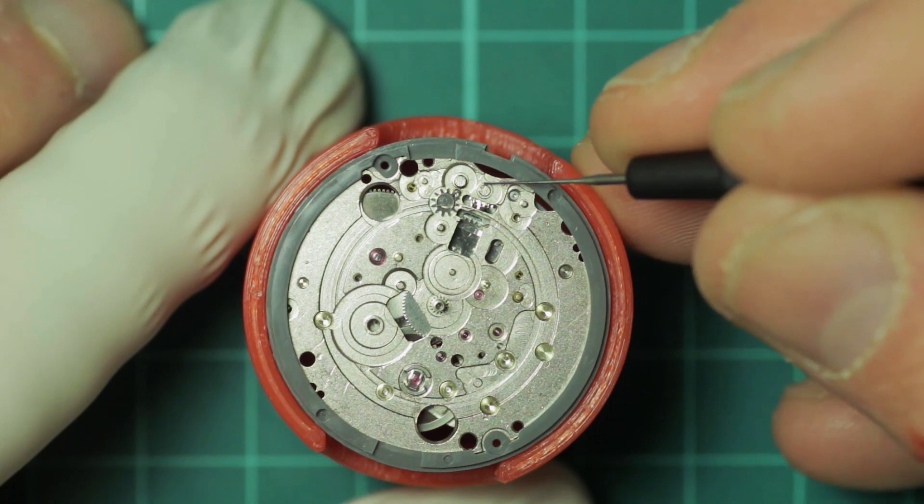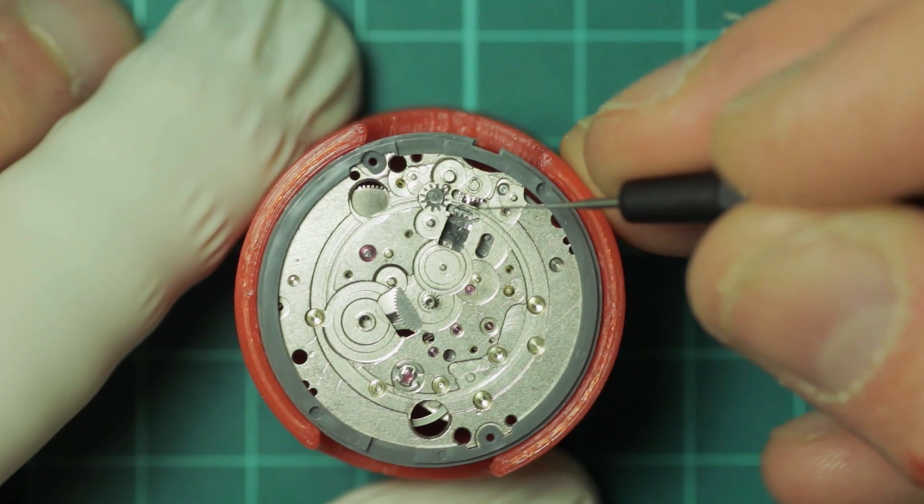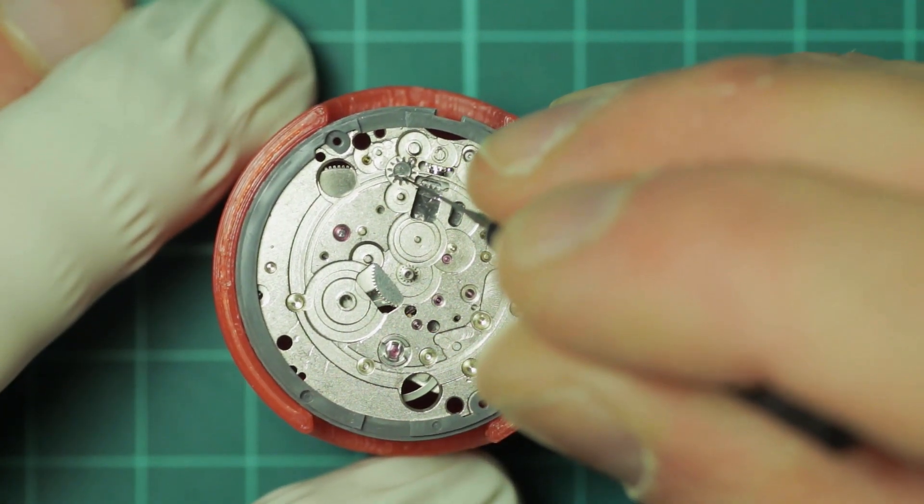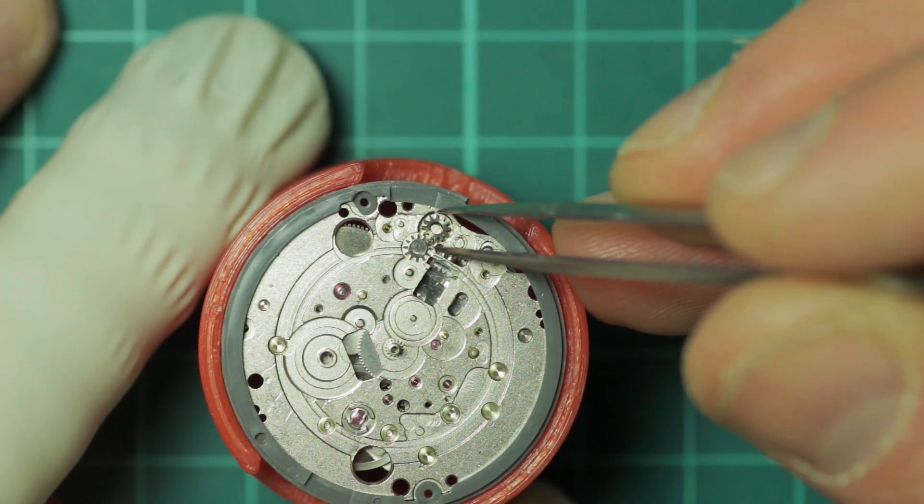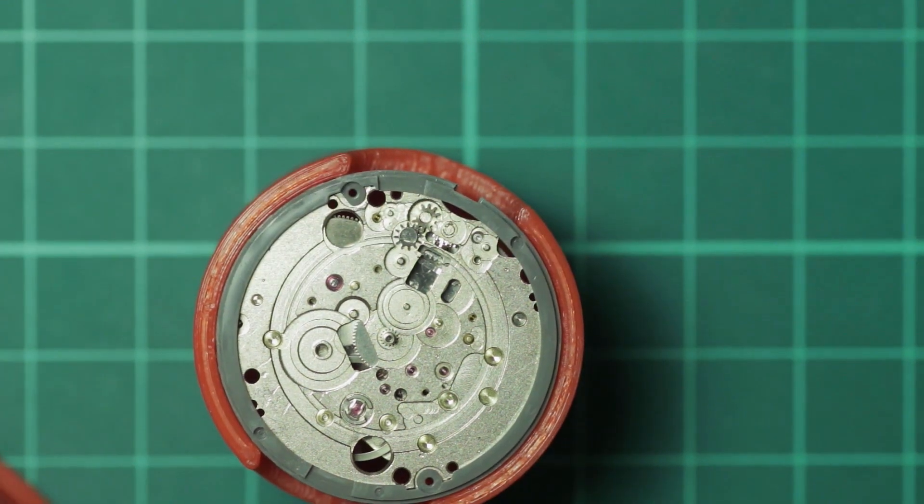And here we start rebuilding the gear system, greasing the pivot points, including the fixed gear that you see there which has a little cutaway in the rivet, allowing you quite nicely to get a small oiler in there.